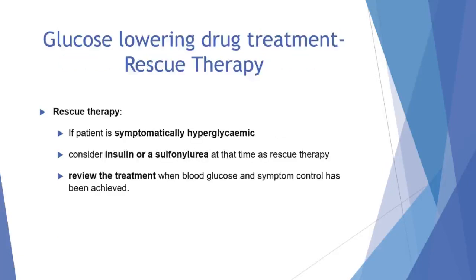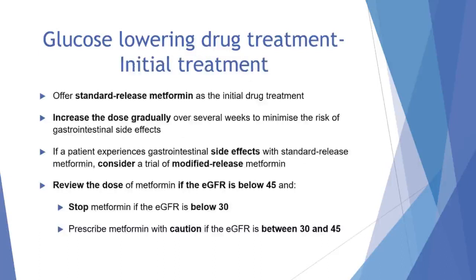In respect of glucose-lowering drug treatment, if a patient is symptomatically hyperglycaemic we will need to consider insulin or a sulfonylurea at that time as rescue therapy, and then review the treatment when blood glucose and symptom control has been achieved. If the patient is not symptomatic, as initial drug treatment we will normally offer standard-release metformin.